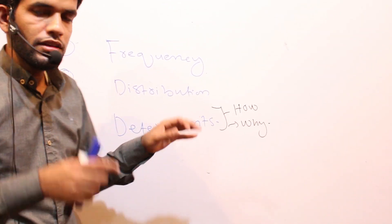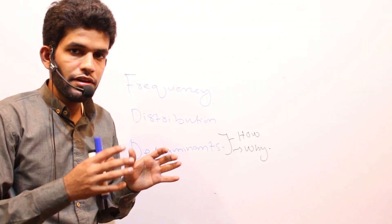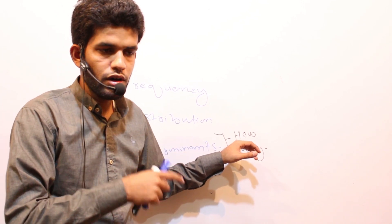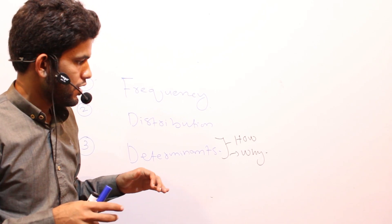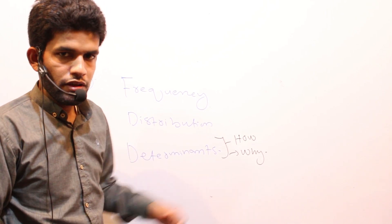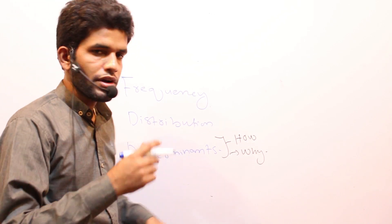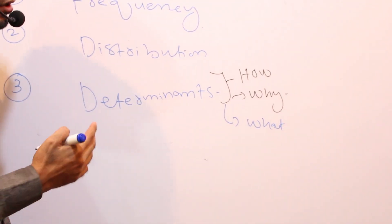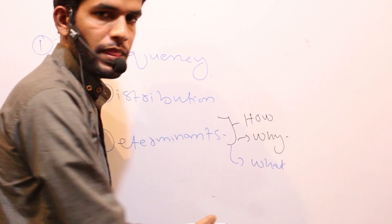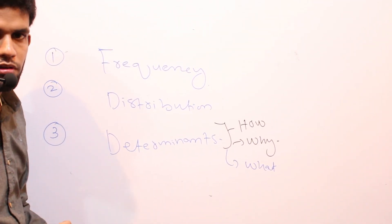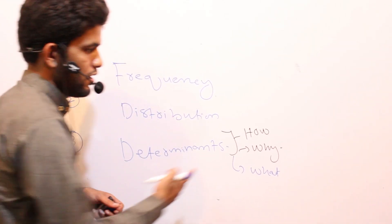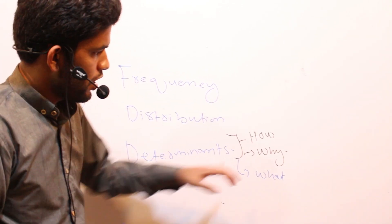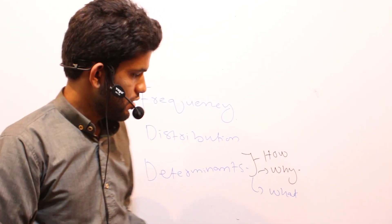In determinants, we find the sources and factors that influence the health of the people. We find how the disease was caused or how it originated, and what are the methods to control or prevent that specific disease. Two key questions in determinants are: how is the disease occurring and why is it happening — what was the cause.